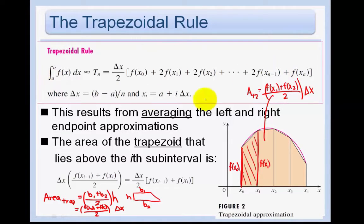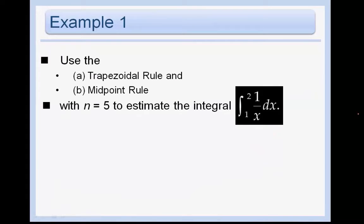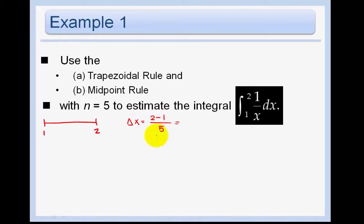This involves a lot of notation, which can be uncomfortable, but the next example should make it really clear. Let's use the trapezoidal rule to approximate the integral. Using a number line from 1 to 2, we split it into five trapezoids. So delta x equals (2 minus 1) over 5, which gives us one-fifth.